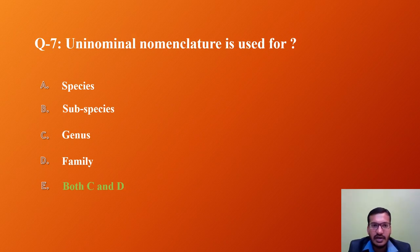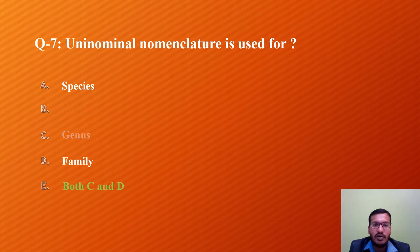Question 7: Uninominal nomenclature is used for which of the following? A) Species, B) Subspecies, C) Genus, D) Family, E) Both C and D. For species we use binominal nomenclature, for subspecies we use trinominal nomenclature, and for taxa above species rank we use uninominal nomenclature. Both genus and family are above species rank, so the correct answer is E — both C and D.